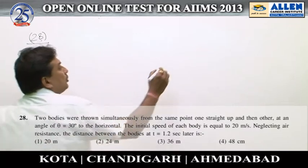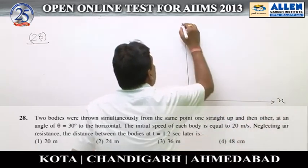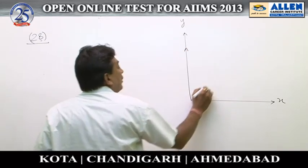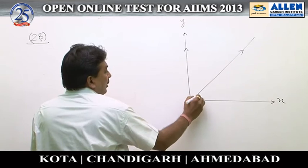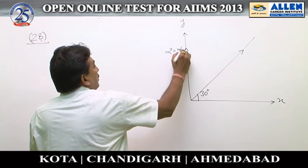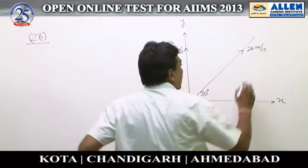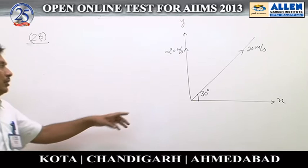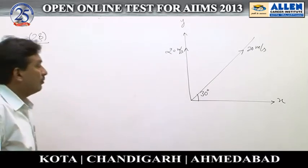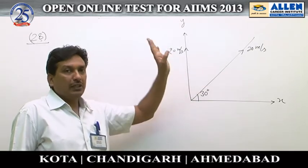Question number 28. Two particles are projected: the first in the vertically upward direction, and the second in a direction at 30 degrees with the horizontal. The velocity is 20 meters per second in the vertically upward direction, and 20 meters per second for the second particle. We need to calculate the distance between both particles after time t equal to 1.2 seconds. Since the relative acceleration for both particles is constant...